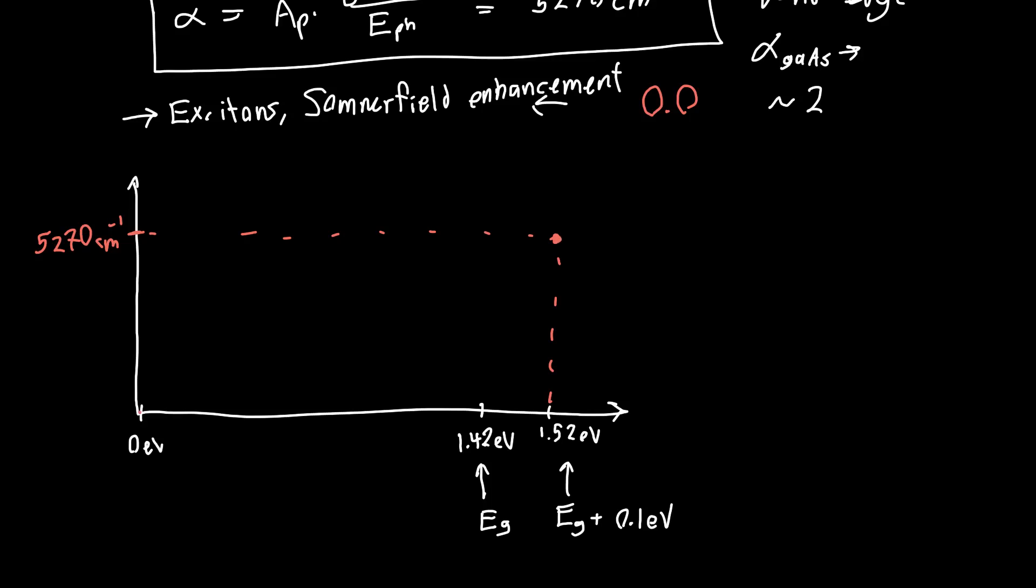And we know that the absorption spectra up to that point, so from a photon energy of 0 eV to the band gap, it should be 0. Because our density of states in this region is 0. This is in the forbidden region between the conduction band and the valence band, where there are no states.